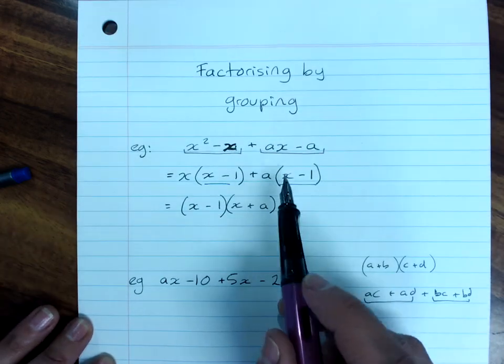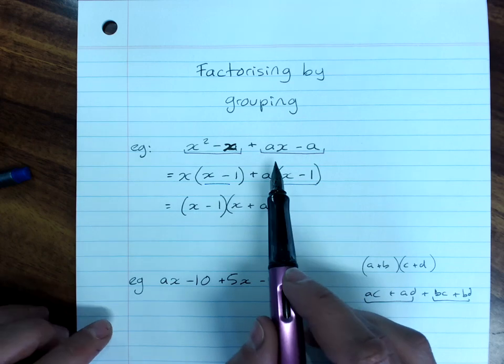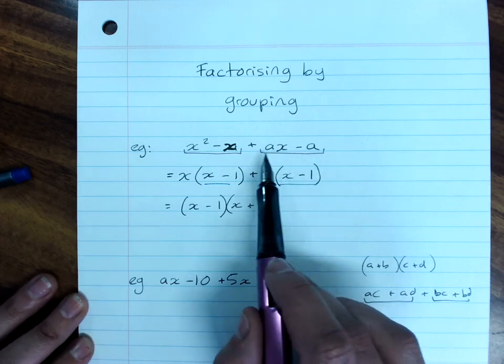Oh and sometimes you can't spot a common factor at all. I should have given you an example of those. You can always get a common factor of one.